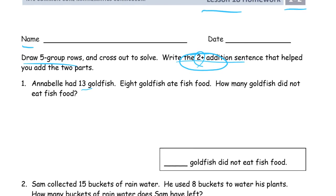Annabelle had 13 goldfish. 8 goldfish ate fish food. How many goldfish did not eat fish food? So, 1, 2, 3, 4, 5, 6, 7, 8, 9, 10. There's our 10, right? And 13 is 10 and 3, right? 10 and 3 is 13.